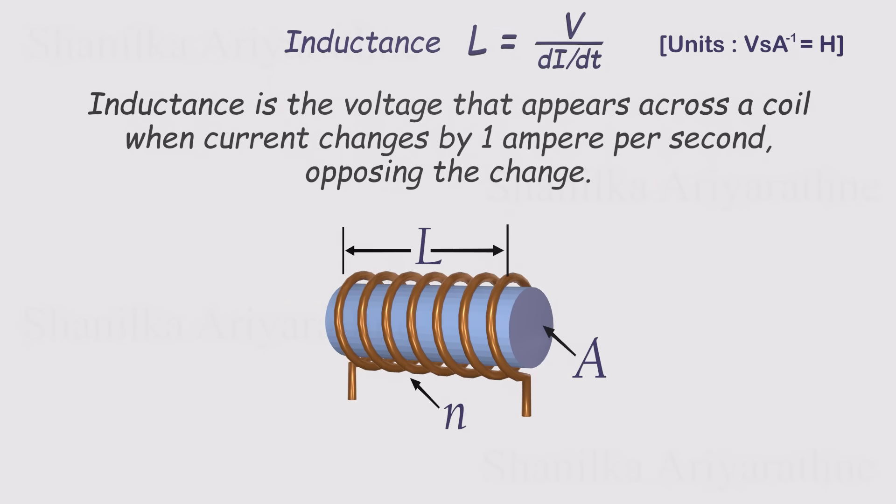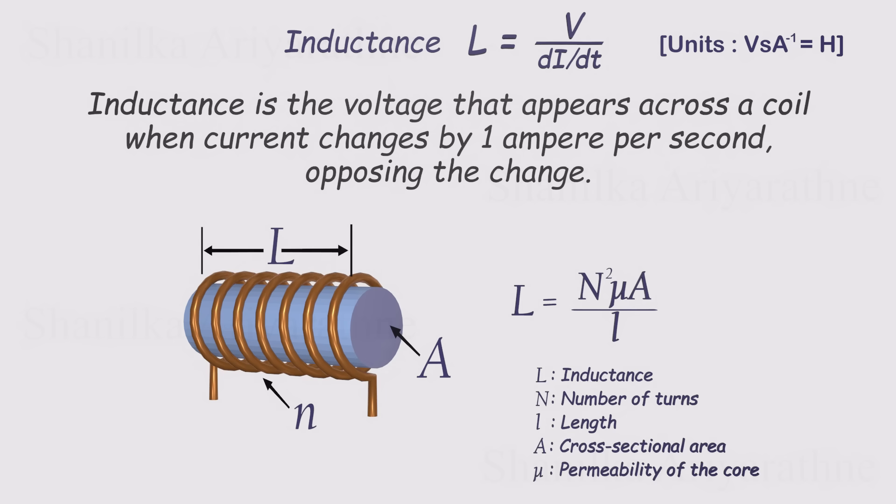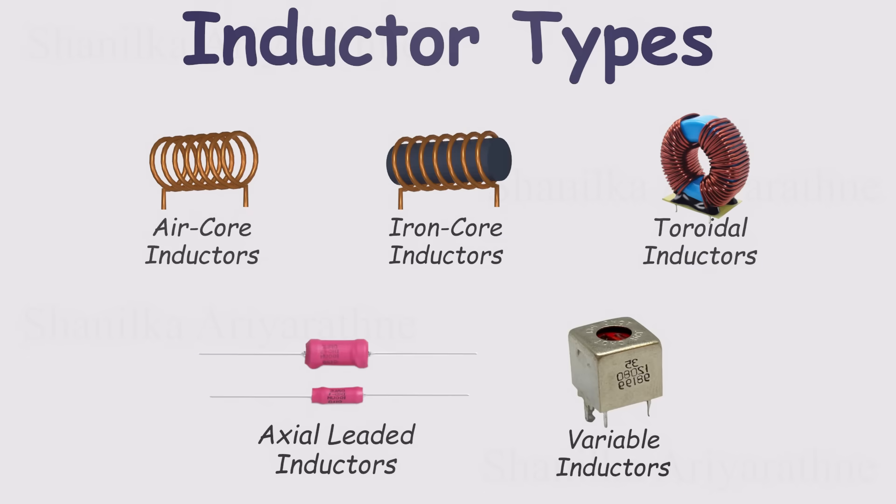For example, in a solenoid type inductor, the inductance is determined by four main factors: the number of turns in the coil, the length of the coil, the cross-sectional area, and the magnetic permeability of the core material. We can increase the inductance by adding more turns to the coil, using a material with higher magnetic permeability for the core, increasing the cross-sectional area, or shortening the length of the coil. Just like capacitors, inductors come in many types and values. Practical inductors can range from just a few micro-Henrys, used in communication circuits, all the way up to several Henrys, which are common in power systems. Inductors can be fixed or variable, and their cores may be made from materials like iron, steel, ferrite, plastic, or even air depending on the application.